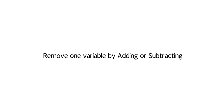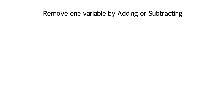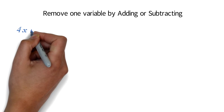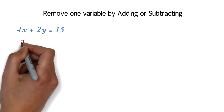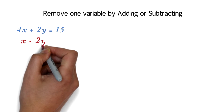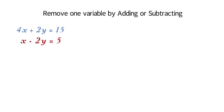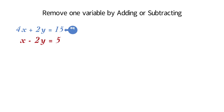The idea of solving by elimination is to remove one of the variables by adding or subtracting so that we can have a simple equation to solve. Let's look at an example to explain it. Solve these simultaneous equations: 4x plus 2y equals 15, and x minus 2y equals 5. Let's call this equation 1 and equation 2.